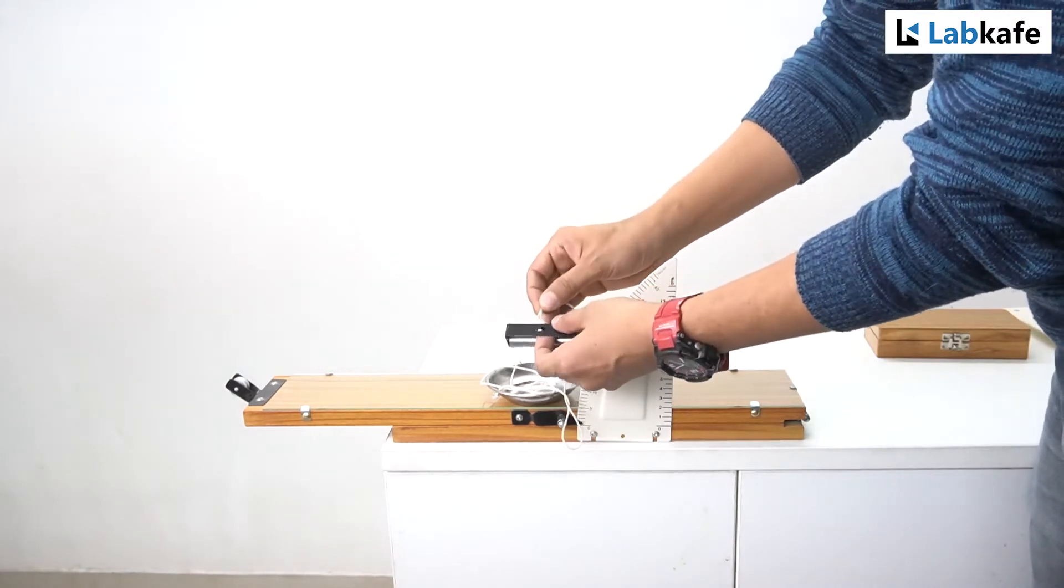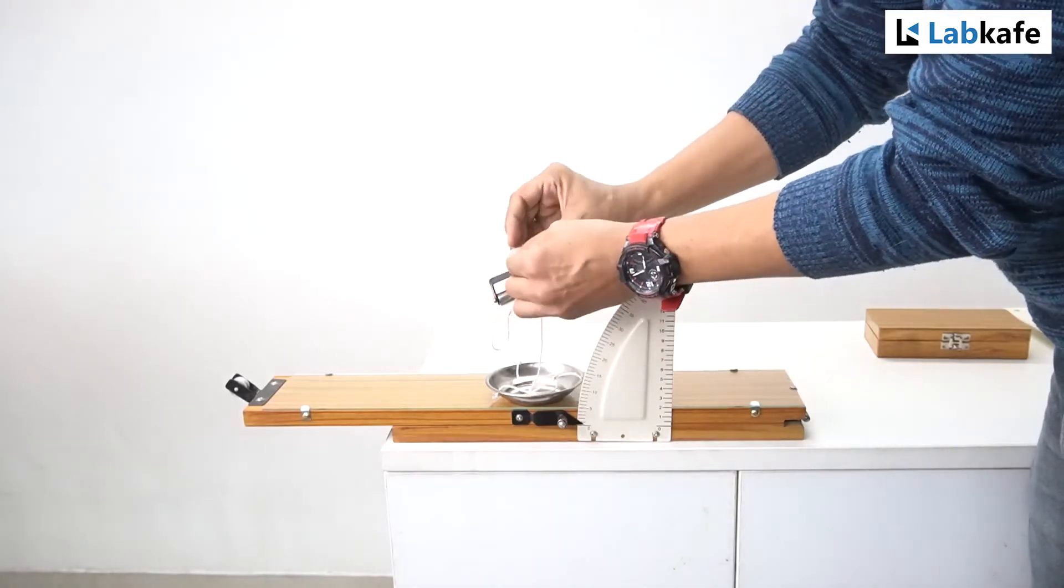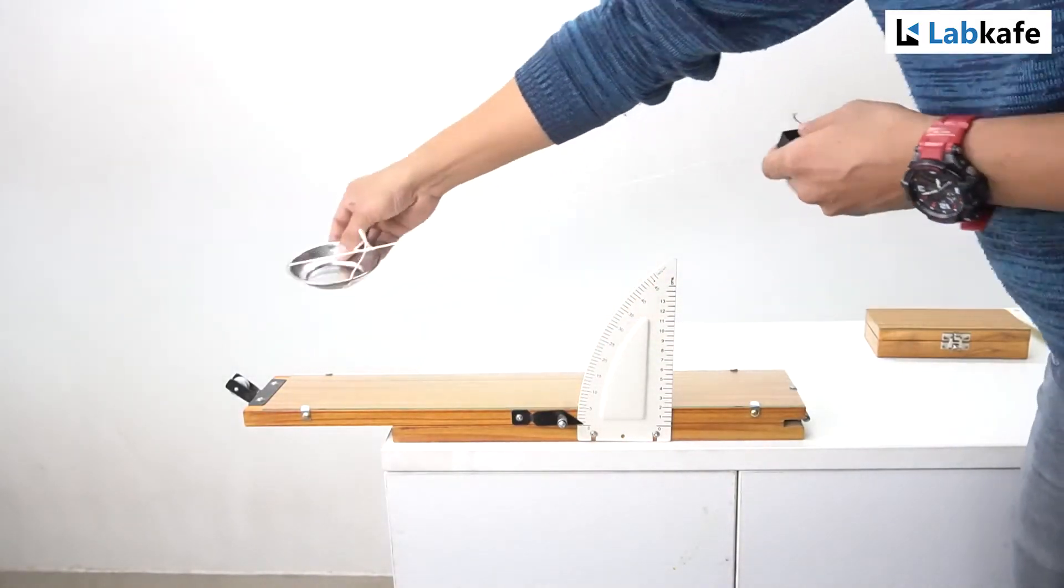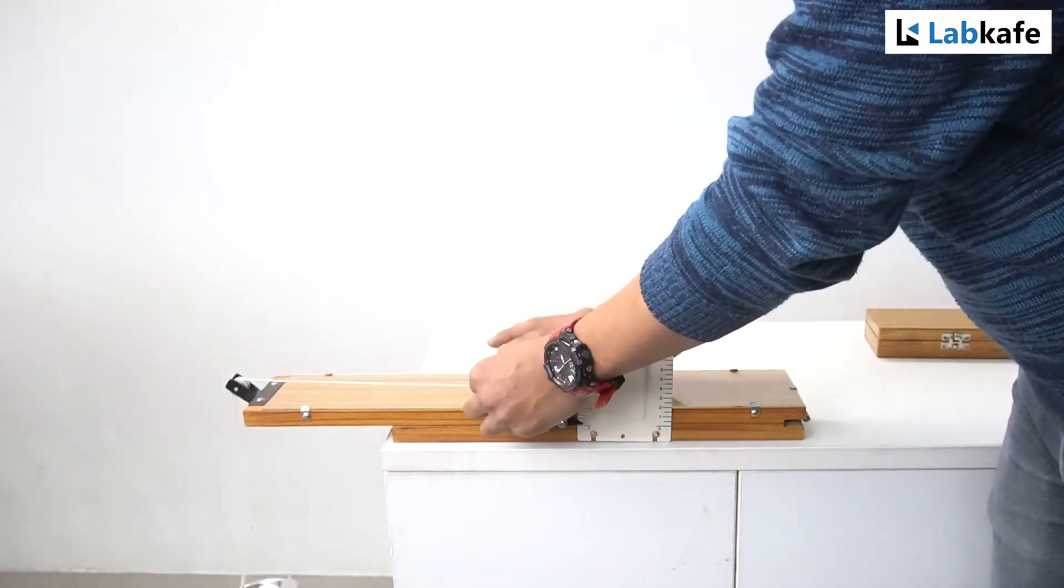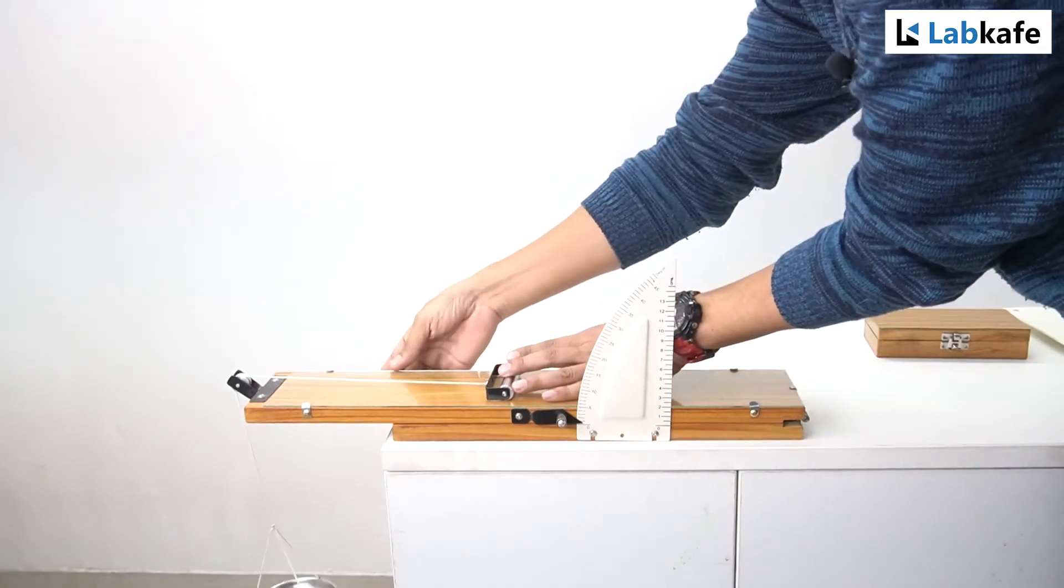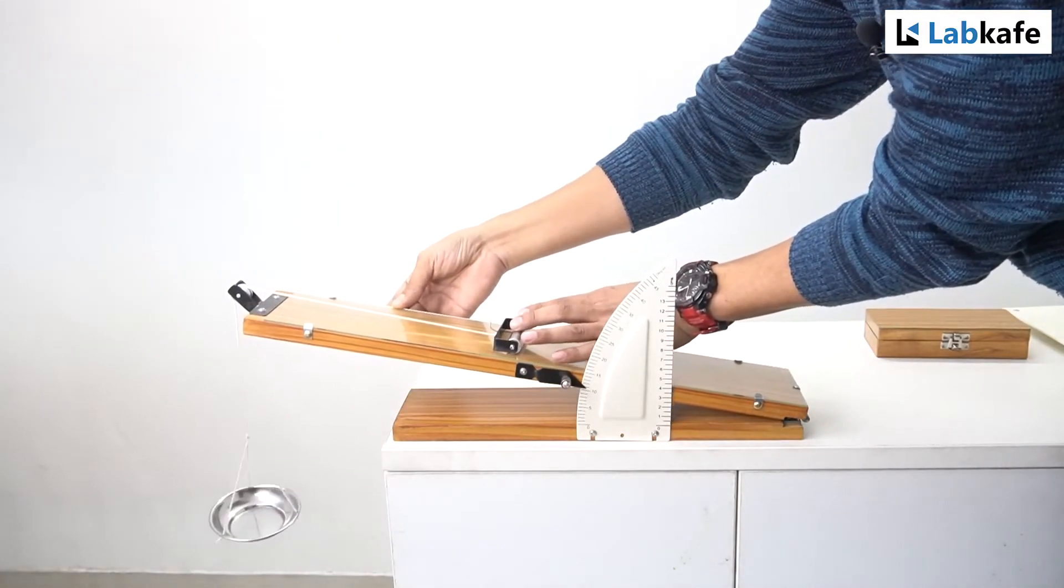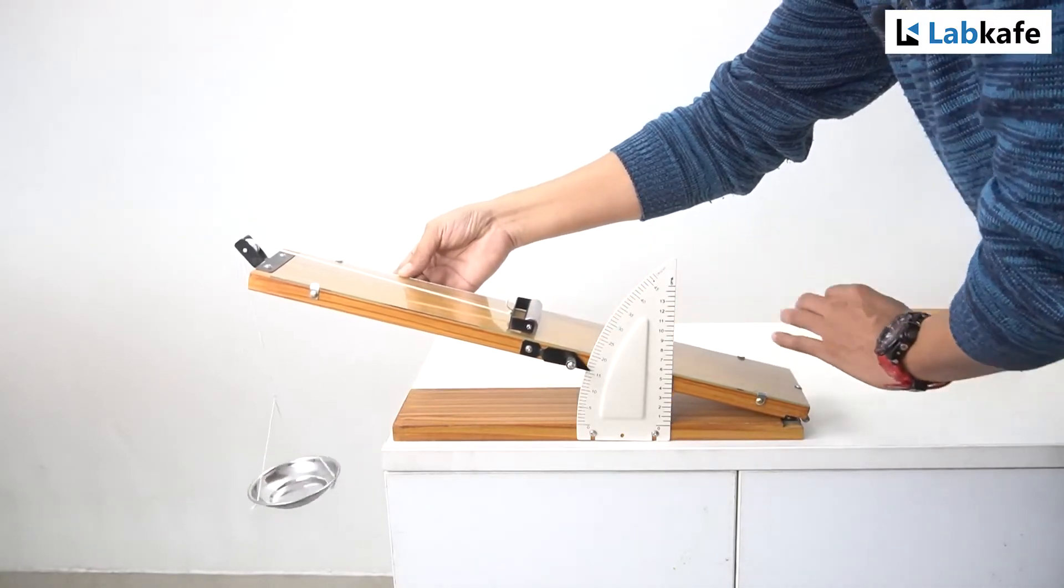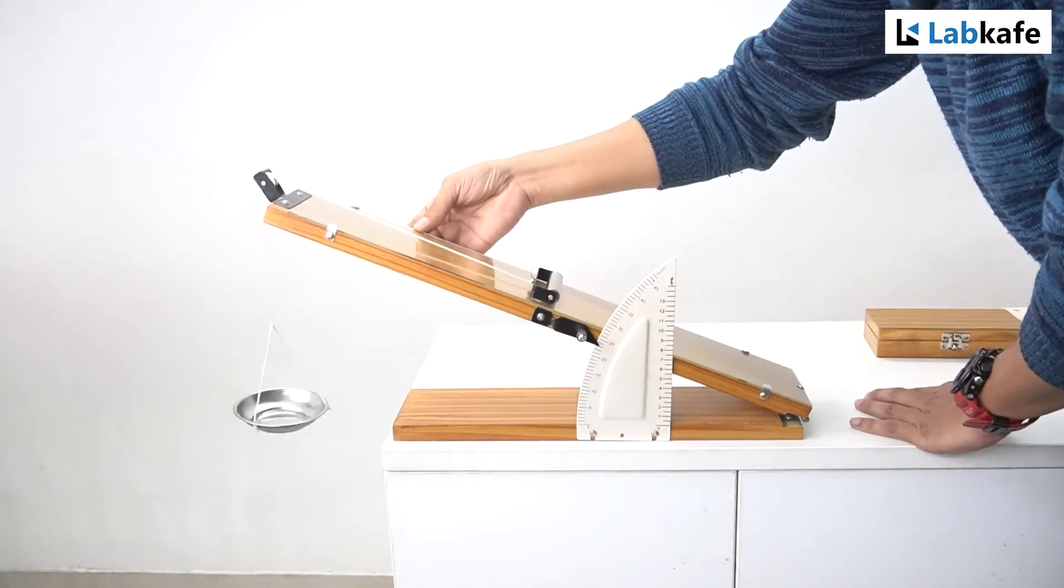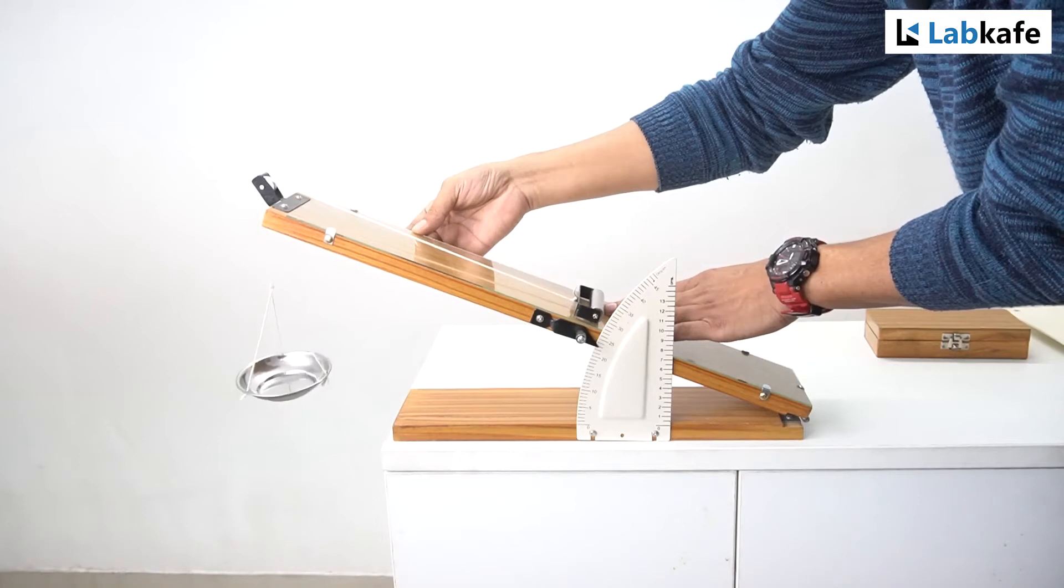Now tie one end of the thread to the roller and place it on the inclined plane. Hold the roller at its position and hang the pan over the pulley. Now raise the inclined plane to make an angle with the base. The roller will start rolling down with acceleration.